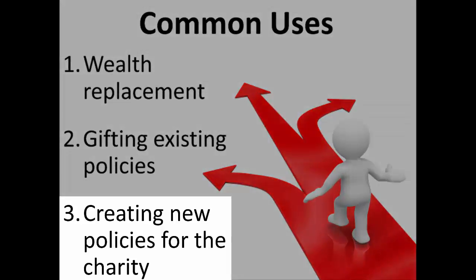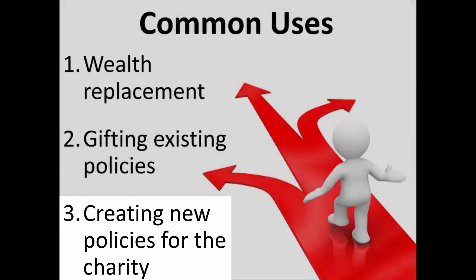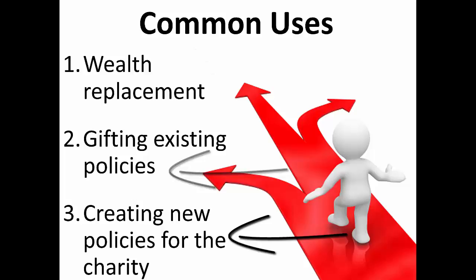Finally, some donors may desire to fund a large posthumous gift for charity by creating and making premium payments on a new charity-owned life insurance policy. Thus, charitable planning commonly employs life insurance in three different ways: wealth replacement, gifting existing policies, and creating new policies for charity. These three uses for life insurance involve dramatically different tax and planning issues. Consequently, each type of application will be reviewed separately.